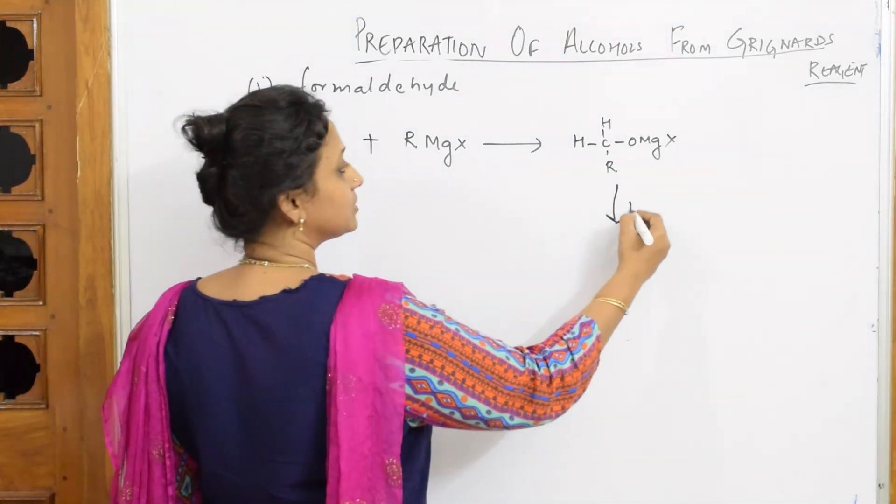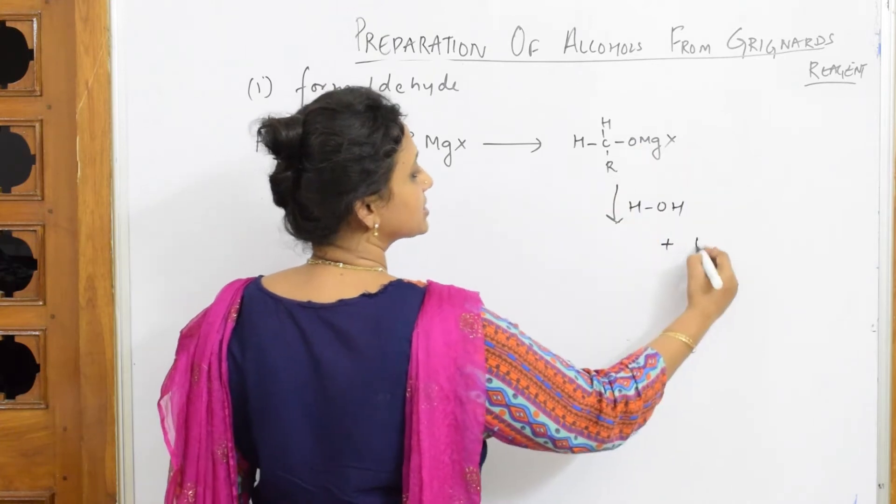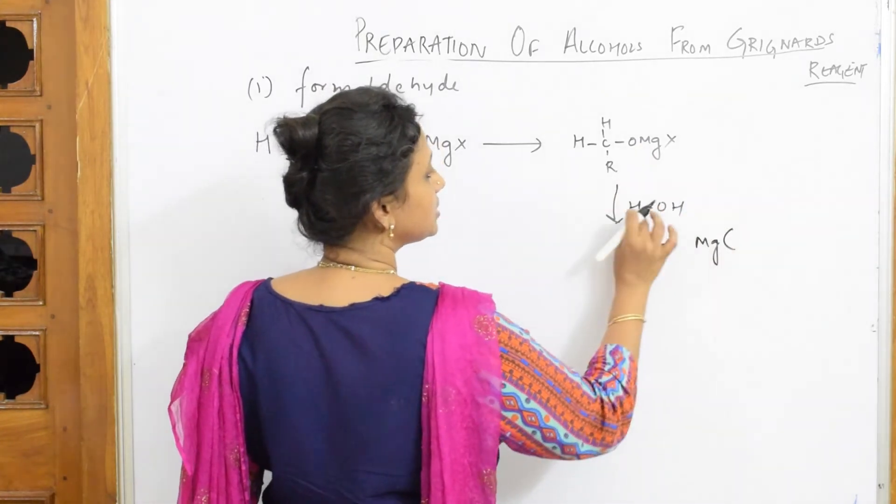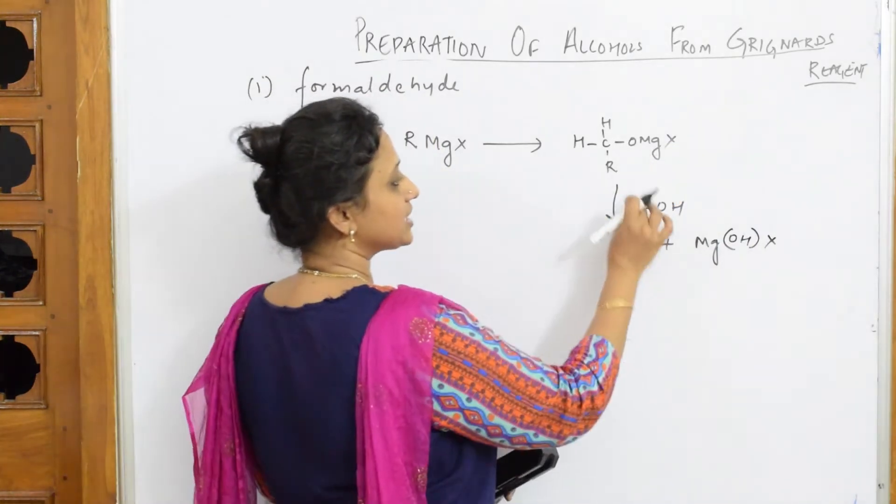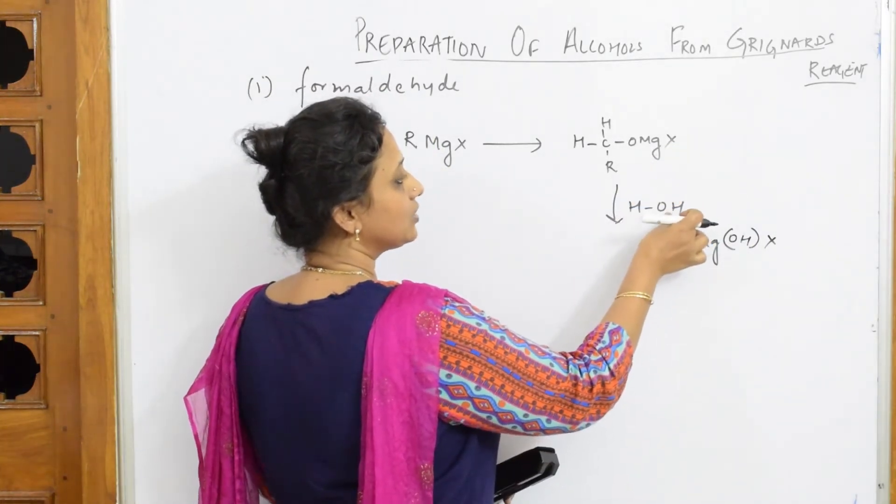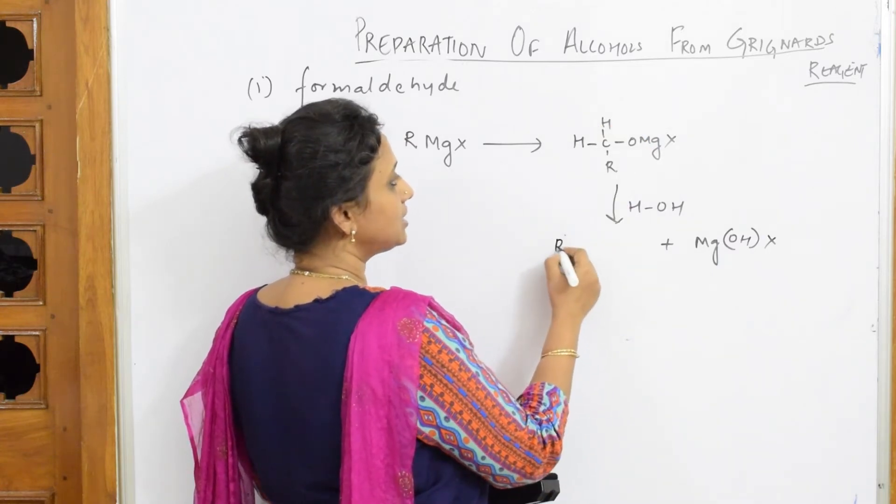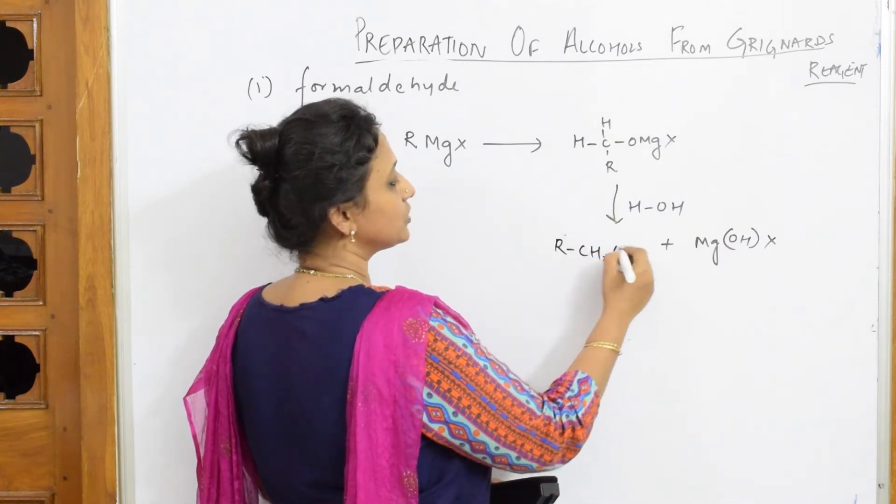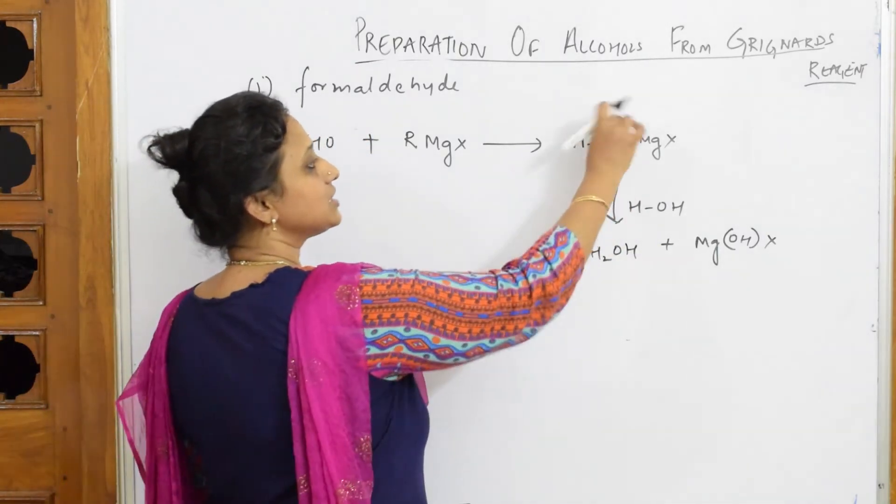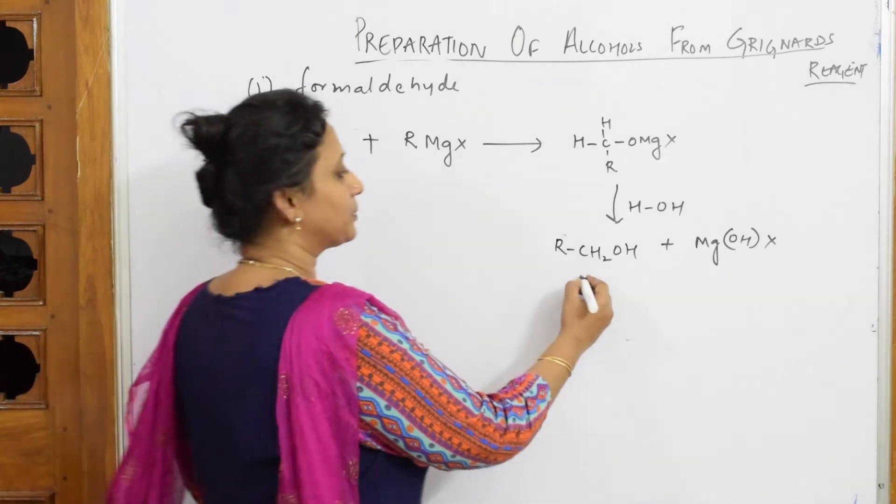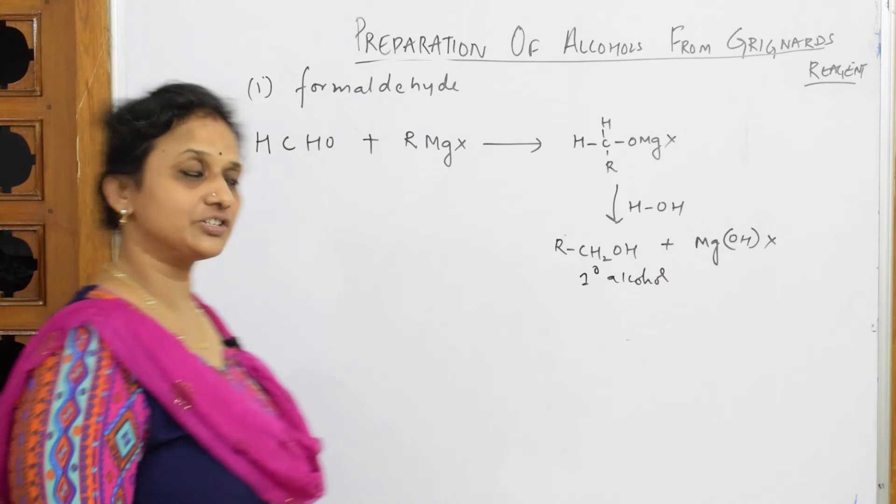So again this on further hydrolysis, you get MgOHX. So MgOHX is done. Now what do I get? I get this directly as an alcohol. So I get RCH2OH. If I rearrange this, I get RCH2OH. I got primary alcohol.